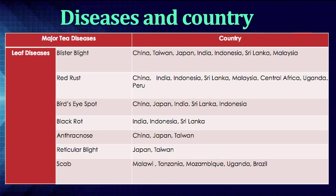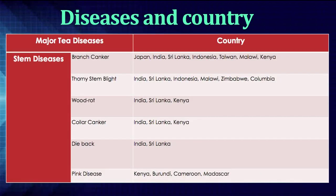Then, black rot, which is seen in countries like India, Indonesia, and Sri Lanka. Anthracnose is seen in China, Japan, and Taiwan. Then, reticular blight, which is found in Japan and Taiwan. The last leaf disease is scab, seen in countries like Malaysia, Tanzania, Mozambique, Uganda, and Brazil.